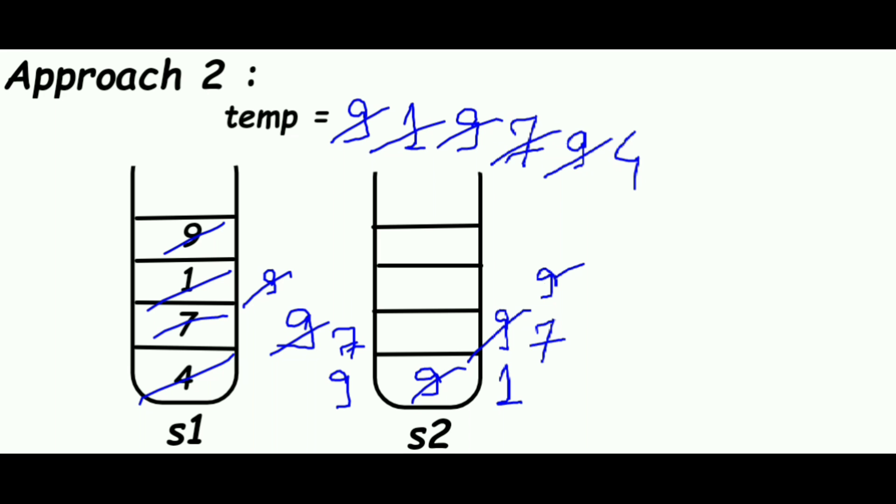And finally we will push 4 into stack S2. Now we will take 7 and since 7 is greater than 4, we can push it into stack S2. Now we can see 9 will be greater than 7, so we will push it into the stack. So the final stack will be looking like this.